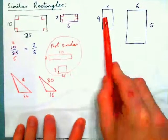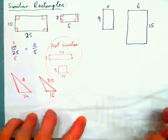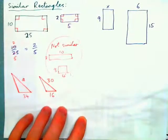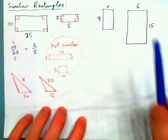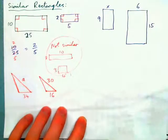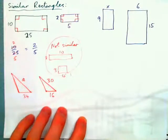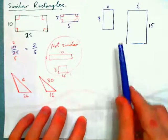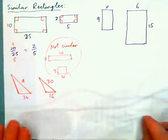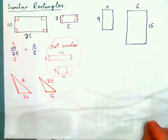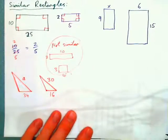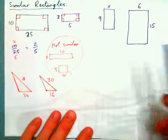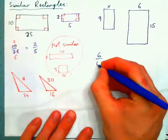Now, if you are told you have two rectangles and they are definitely similar, then you can form a proportion with the lengths of the sides and solve for the missing side length. Press pause and see if you can figure this one out. We could say 6 over 15 is equal to what?